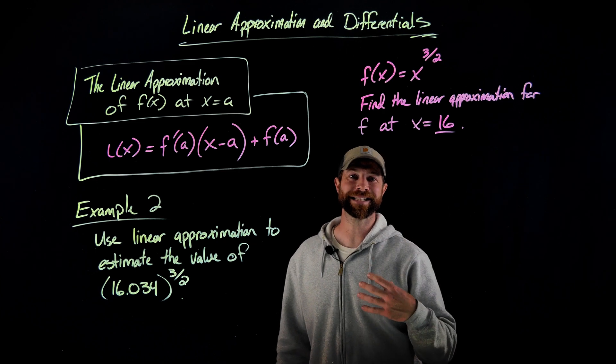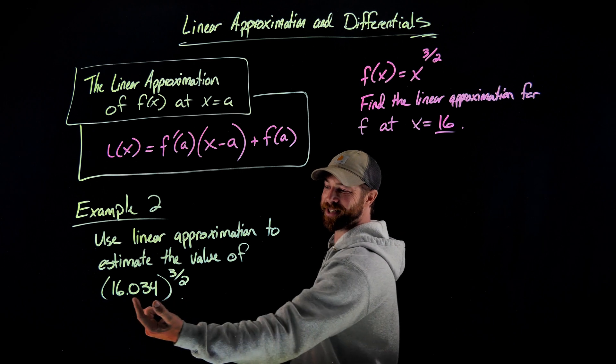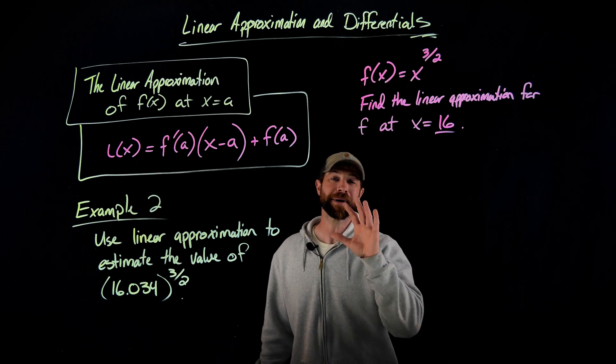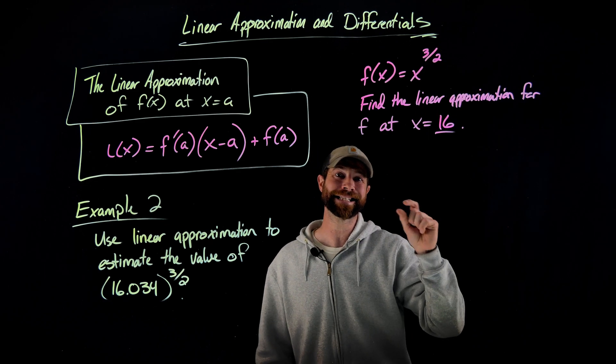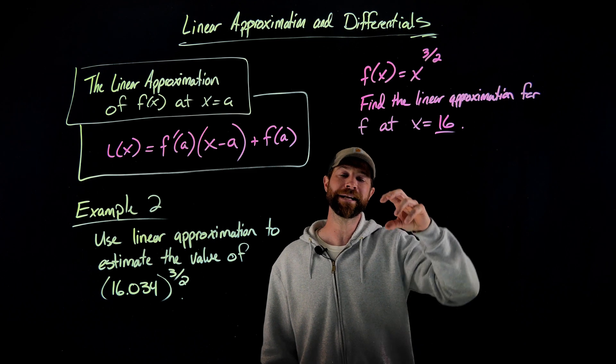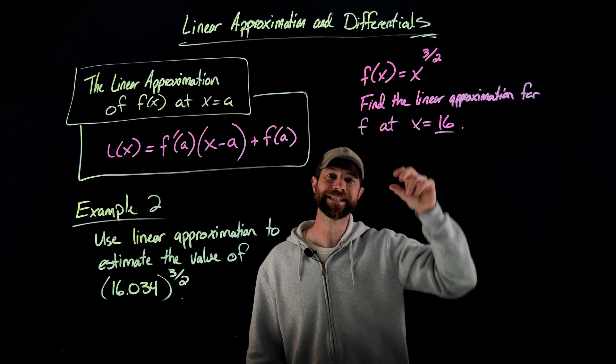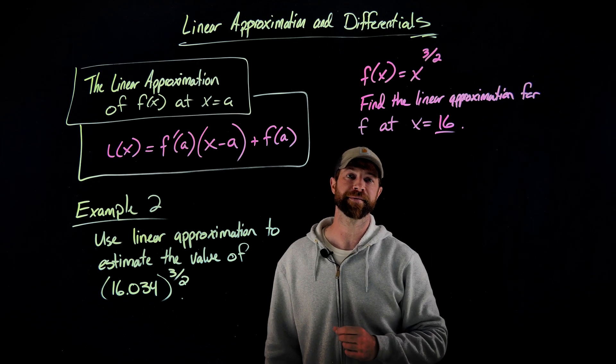The first reason I would see to use the a value of 16 in this case is because 16 is the closest integer to 16.04. But also more importantly, if we think about what's happening with this exponent right here, when you raise something to the three halves power, that means you're taking the square root and then raising to the third power. 16 is a number that we can easily take the square root of.